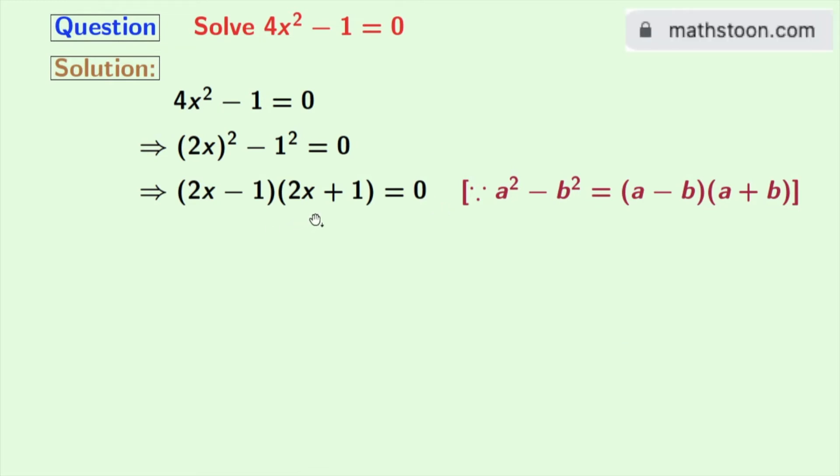If the product of two numbers is 0, then either of those numbers must be 0. So either 2x - 1 = 0 or 2x + 1 = 0.